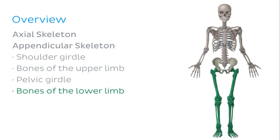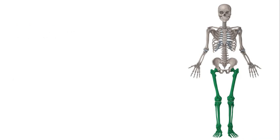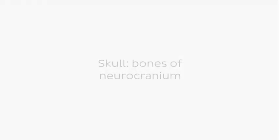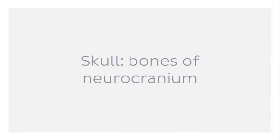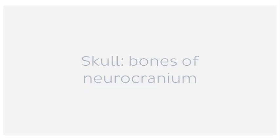We won't be looking at every single bone of the body, but we will touch on some important points relating to the main bones of each region. So let's start with the axial skeleton, where we'll begin with the skull, starting specifically with some of the bones of the neurocranium.